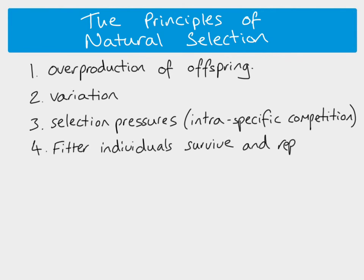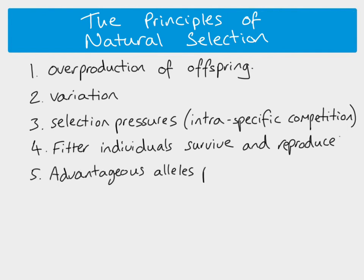Because of selection pressures and because there's variation, the fitter individuals survive and reproduce. When we say 'fitter,' we mean the individuals with characteristics that are more advantageous and more beneficial in that particular environment. If the environment changes, you might suddenly find that different characteristics are more advantageous.